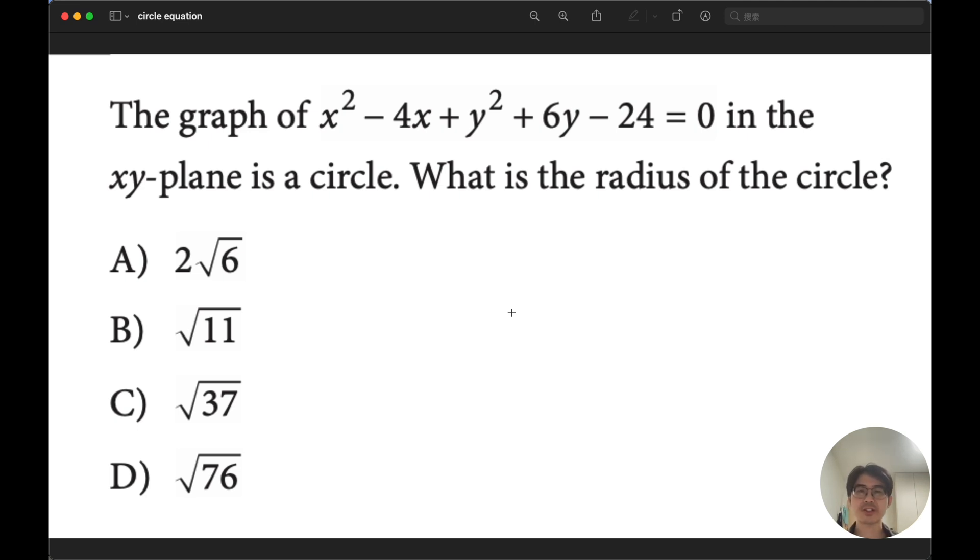If we input the choices into Desmos, we can convert them into decimal form. After you go over the four choices, you'll notice that choice C, which is root 37, is the correct answer. Let me show you.